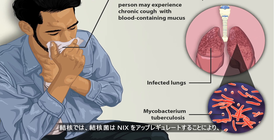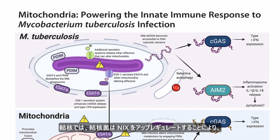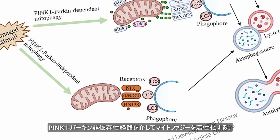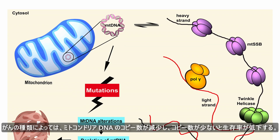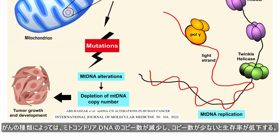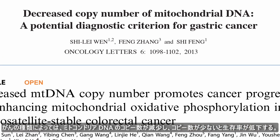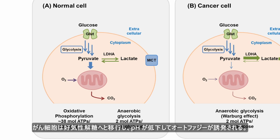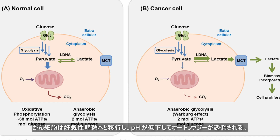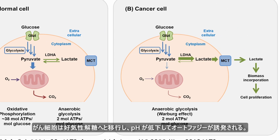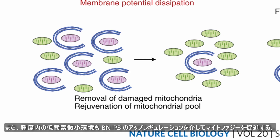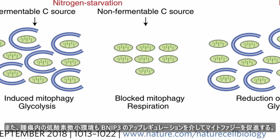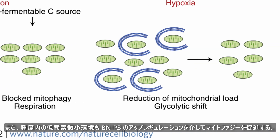In tuberculosis, Mycobacterium tuberculosis activates mitophagy through the PINK1-Parkin-independent pathway by upregulating NIX. In some types of cancer, the number of copies of mitochondrial DNA is reduced, and low copy number is associated with poor survival. Cancer cells undergo a shift to aerobic glycolysis, which reduces pH and triggers autophagy, and the hypoxic microenvironment within tumors also promotes mitophagy via upregulation of BNIP3.